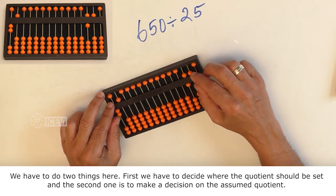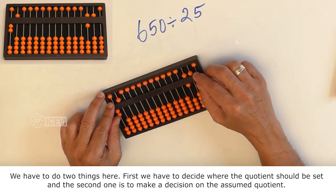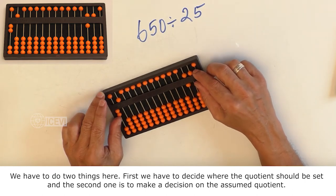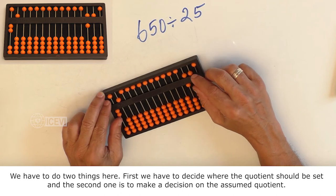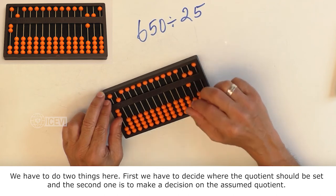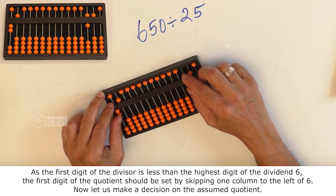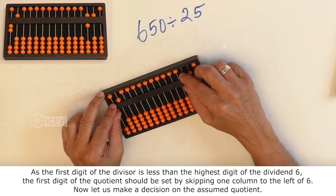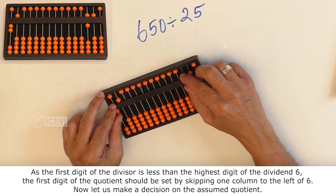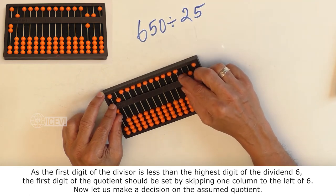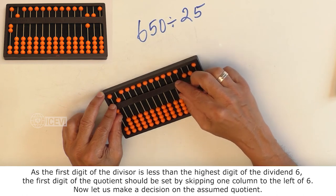We have to do two things here. First, we have to decide where the quotient should be set. And the second one is to make a decision on the assumed quotient. As the first digit of the divisor is less than the highest digit of the dividend 6, the first digit of the quotient should be set by skipping one column to the left of 6.